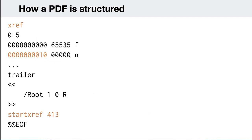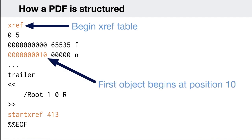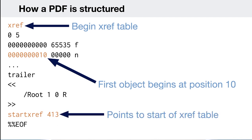This is the xref table. An xref table always begins with the 'xref' keyword. The PDF specification specifies a blank object at the start with a specific revision number — this one is free, which is what 'f' indicates. After that unused object, you have the first object, and the number refers to the position in the document where this object occurs — in this case it's 10. The 'startxref' keyword tells you where the start of the xref table occurs — in this case 430 — so clients know where the xref table begins.